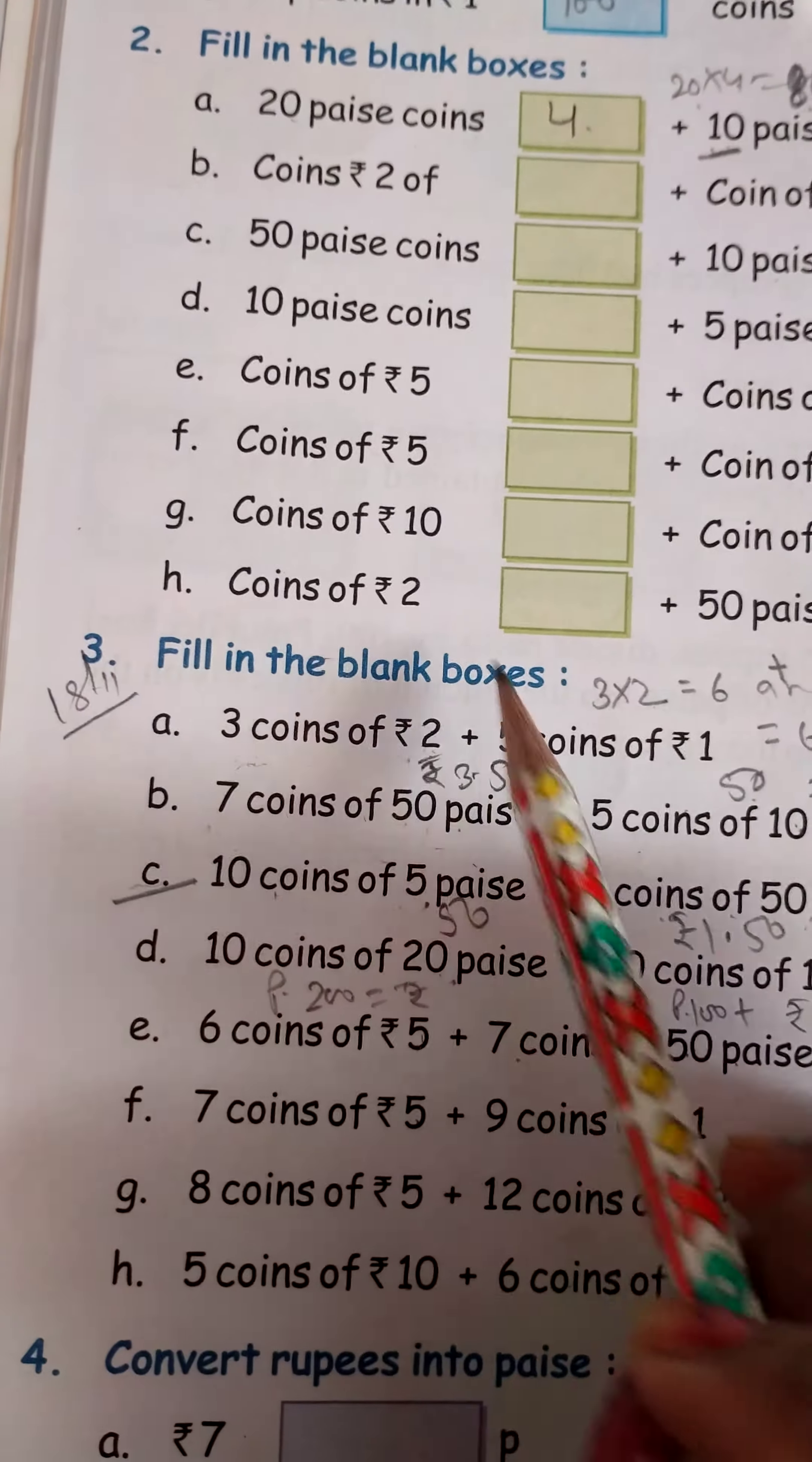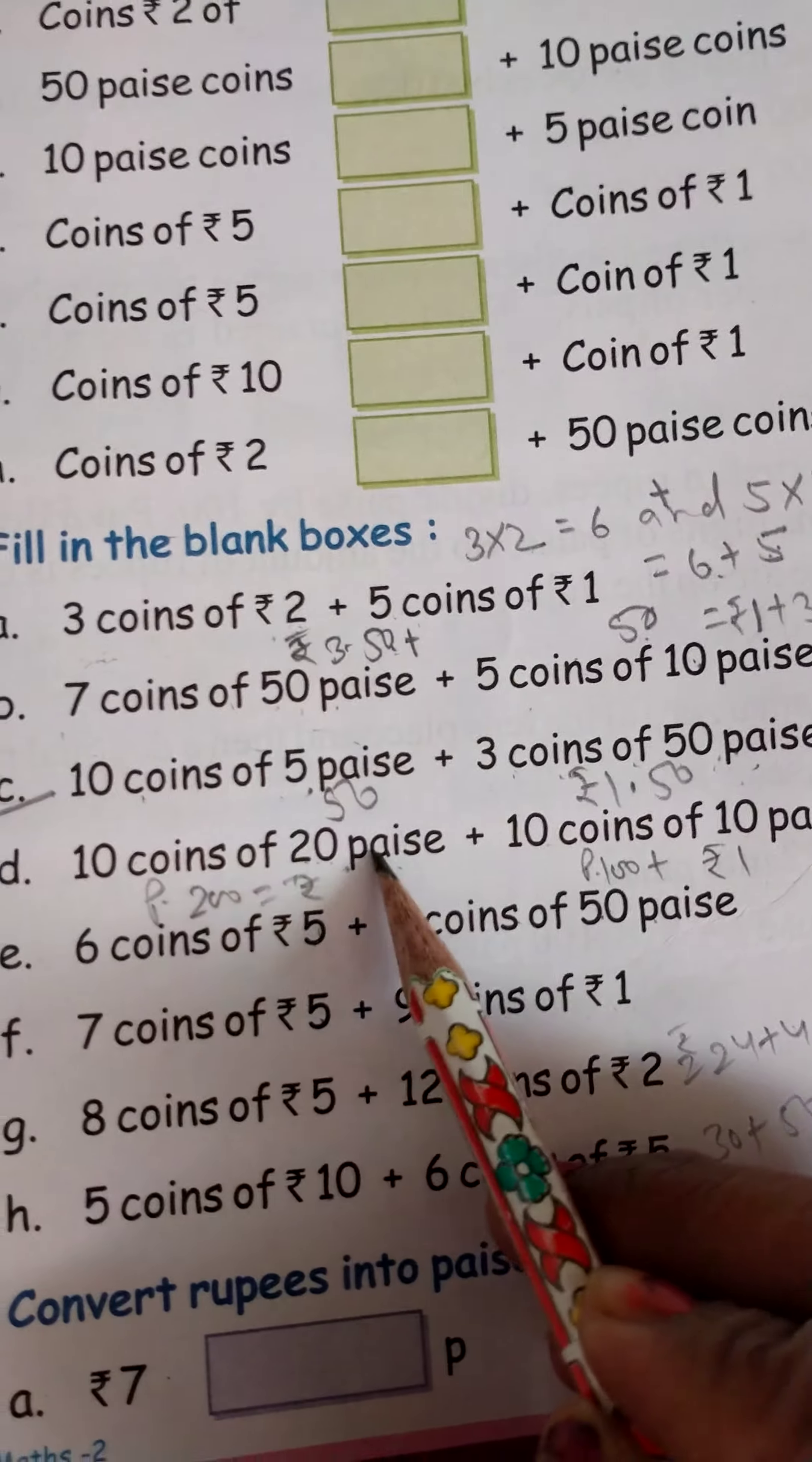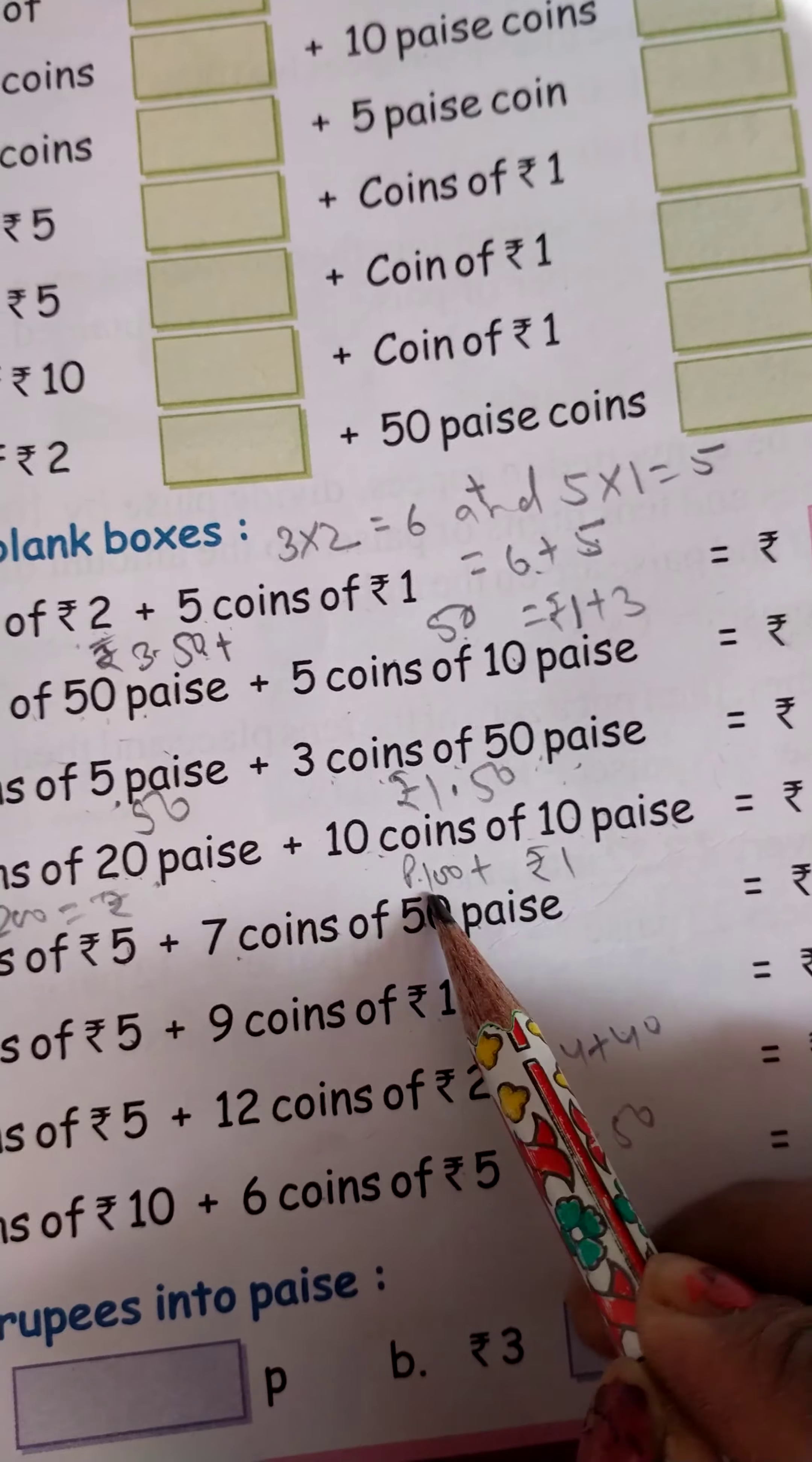Question number 3 we are doing, students. Part A, B, C has been completed. Now let's start part D: 10 coins of 20 paise. It means 20 for 10, and 10 coins of 10 paise. It means 10 coins of 10, so 10 multiplied by 10 equals 100.